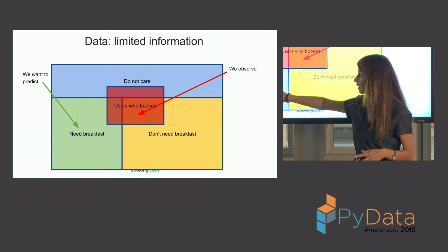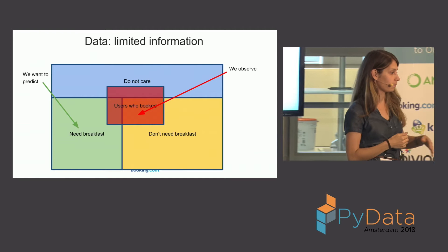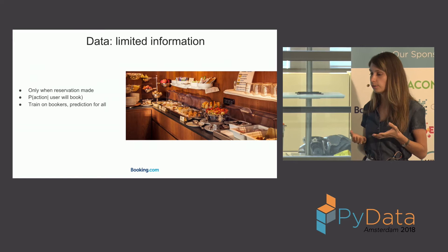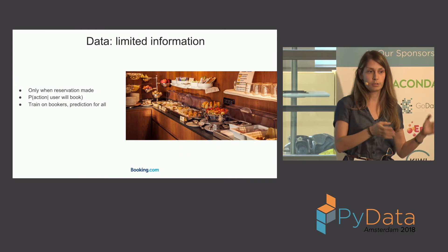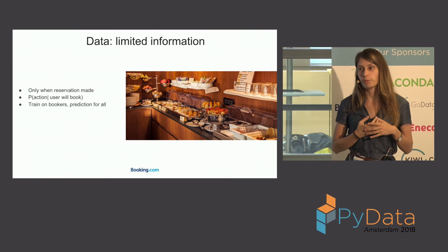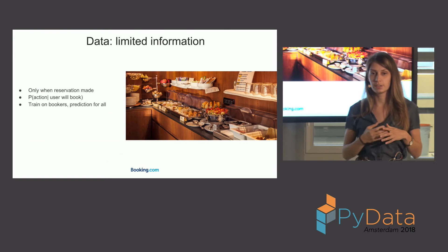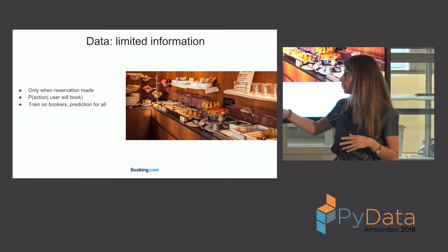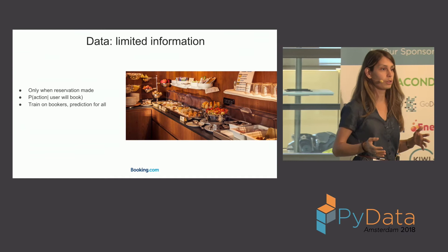So what we observe and what we actually want to know overlap only partially — it's very tricky to say that everyone we observe behaves the same as the full population. Given this limited information, you might assume that users who made a booking and those who didn't are exactly the same, and extrapolate your results to all users. But the problem is you're estimating the conditional probability of the action — in our case, booking breakfast given that the user will book — which can be very different users.